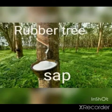Rubber is made from the sap of the rubber tree. Sap means a milky substance.